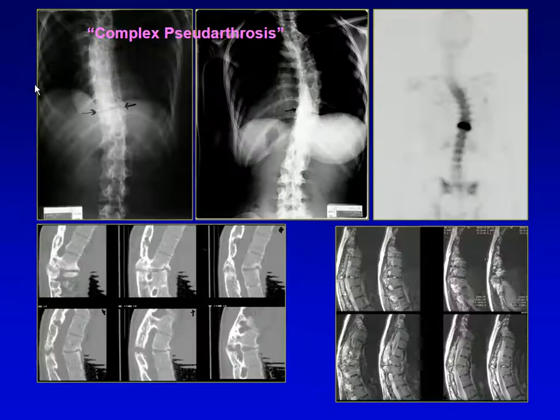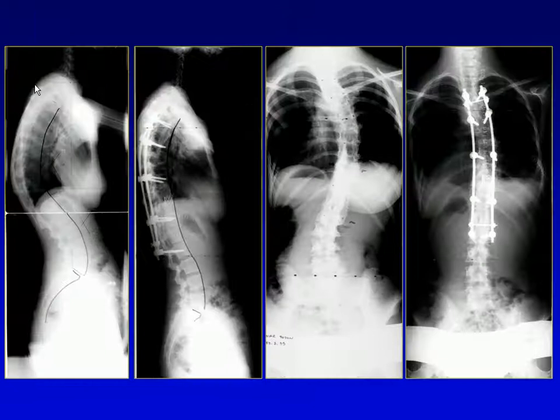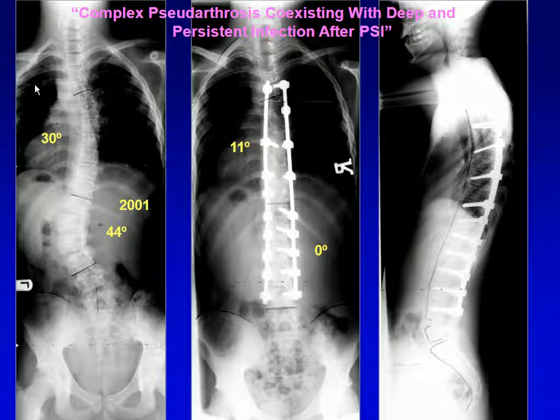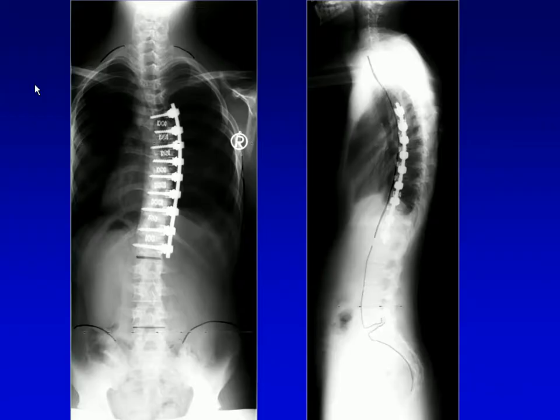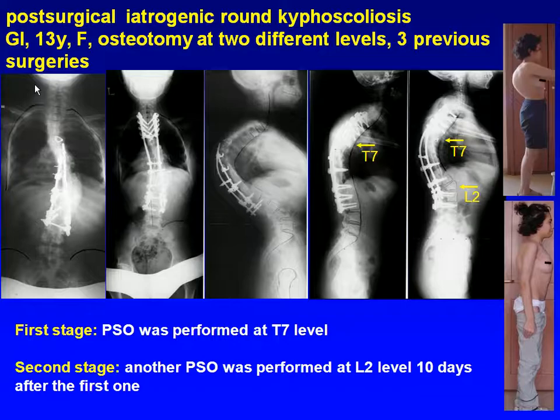A complex pseudoarthrosis case — you can see posterior and anterior views showing very complex pseudoarthrosis. We did combined anterior and posterior surgery. Another case involved acute infection with resistant and recurrent infection, and complex pseudoarthrosis coexisting with deep and persistent infection. We removed all implants and then performed anterior surgery due to three-level pseudoarthrosis. Post-surgical iatrogenic antikyphoscoliosis was also noted.